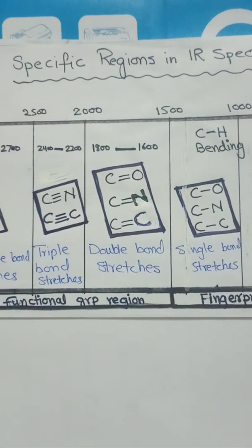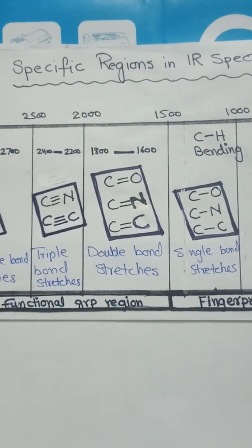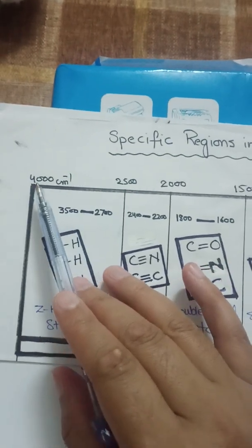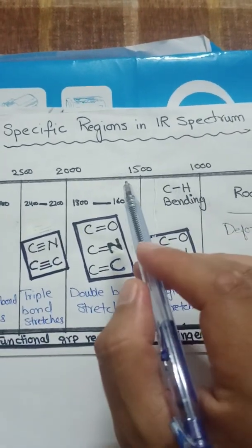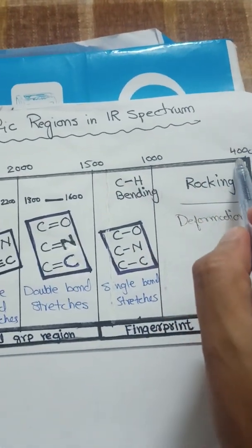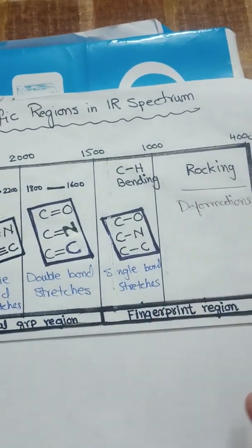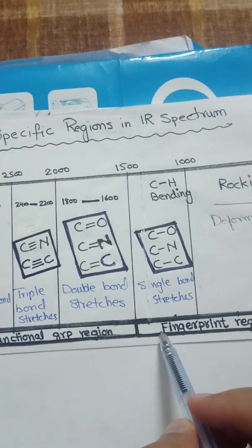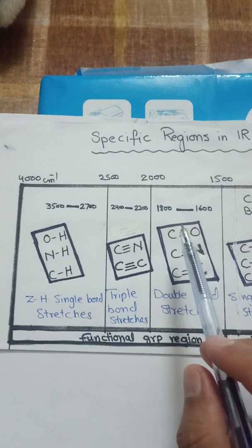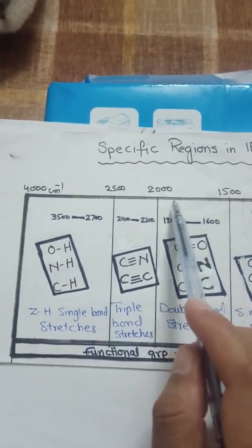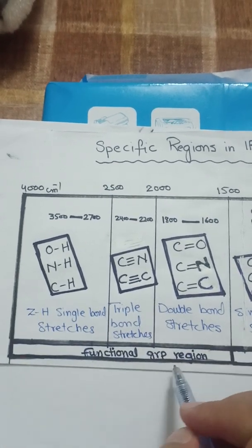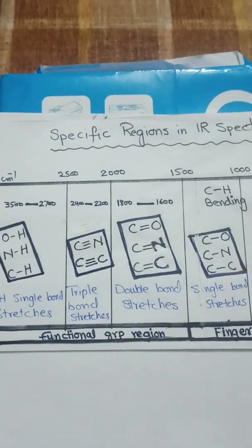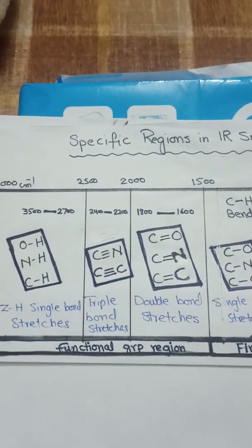In IR spectrum we have almost 400 to 4000 per centimeter wavenumber region. From 400 or 500 to 1500 per centimeter this region is the fingerprint region, where most of the absorption bands will be present for our compounds. From 1500 to 4000 per centimeter this region is called the functional group region, where most of the functional groups and their peaks are present.